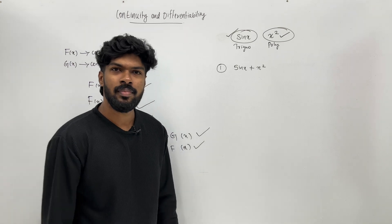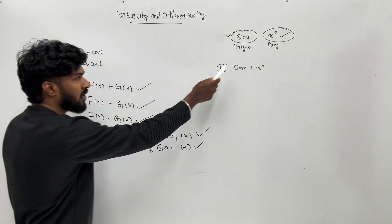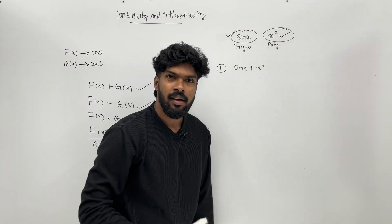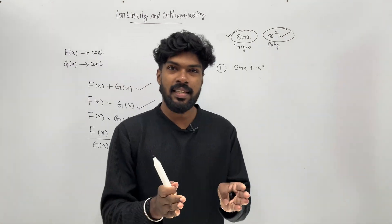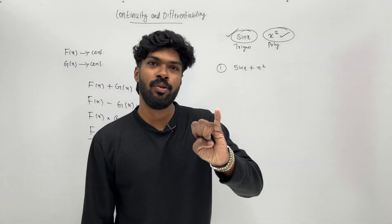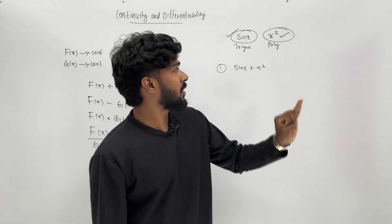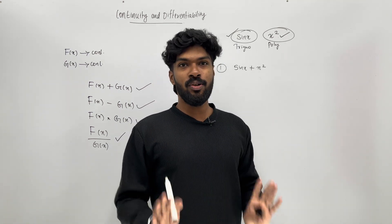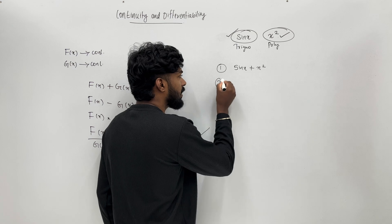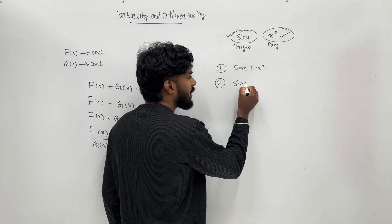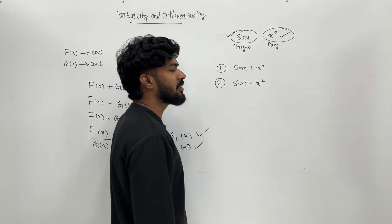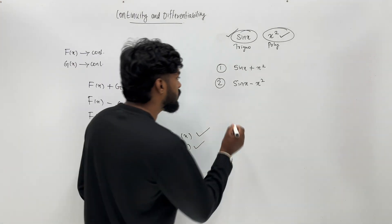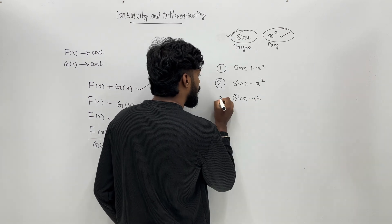What are we going to do? We are going to see how many functions are continuous. The meaning is: sin x is a trigonometric function — continuous. x squared is a polynomial function — continuous. This pair is continuous, so their composition sin(x²) is also continuous.